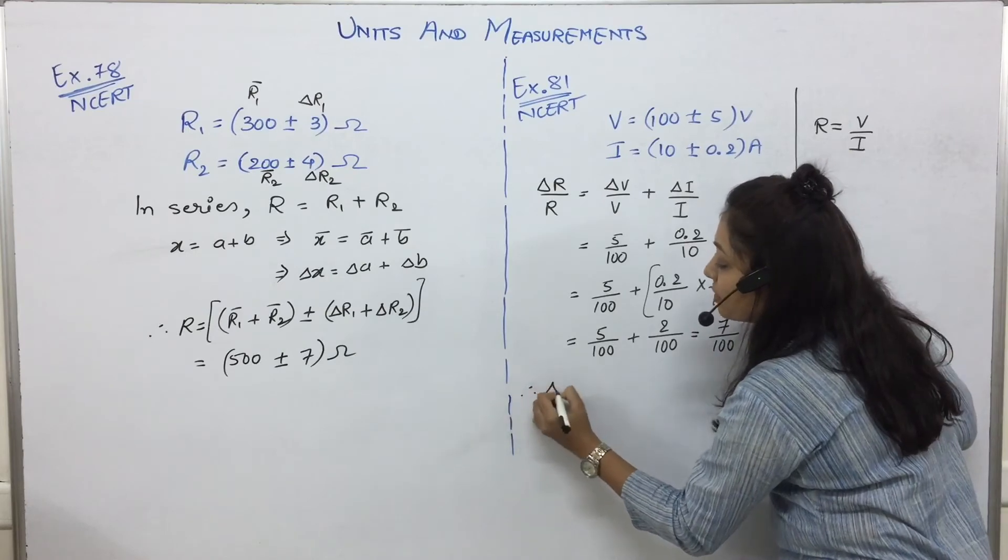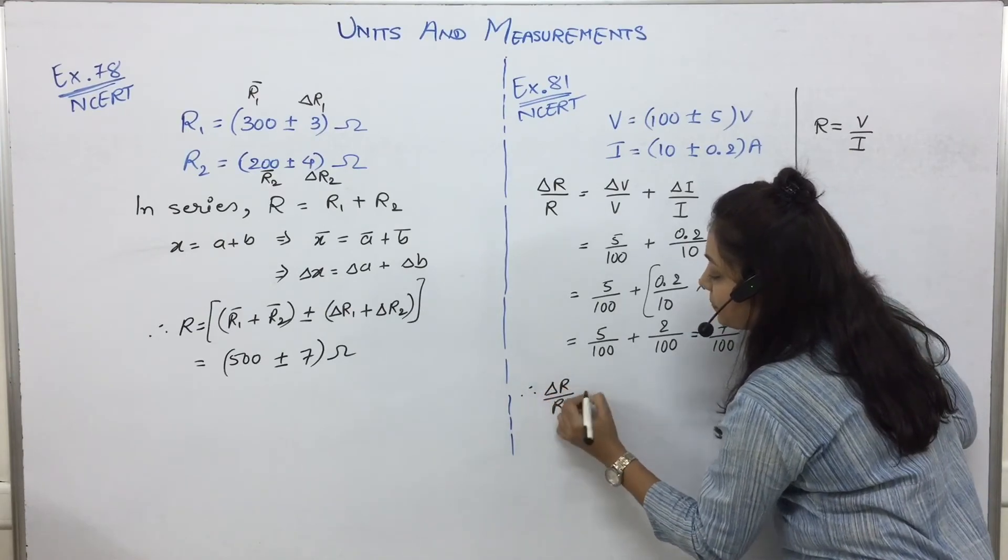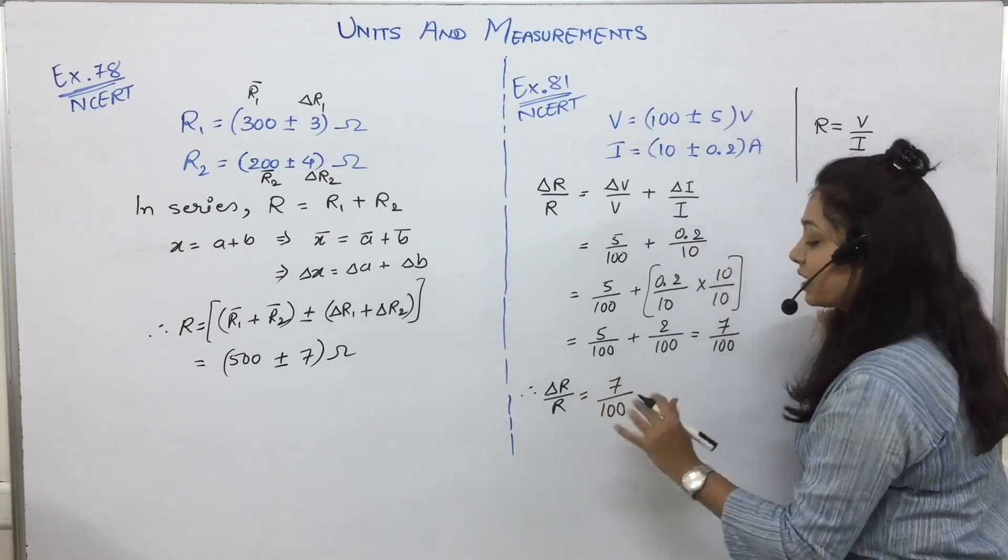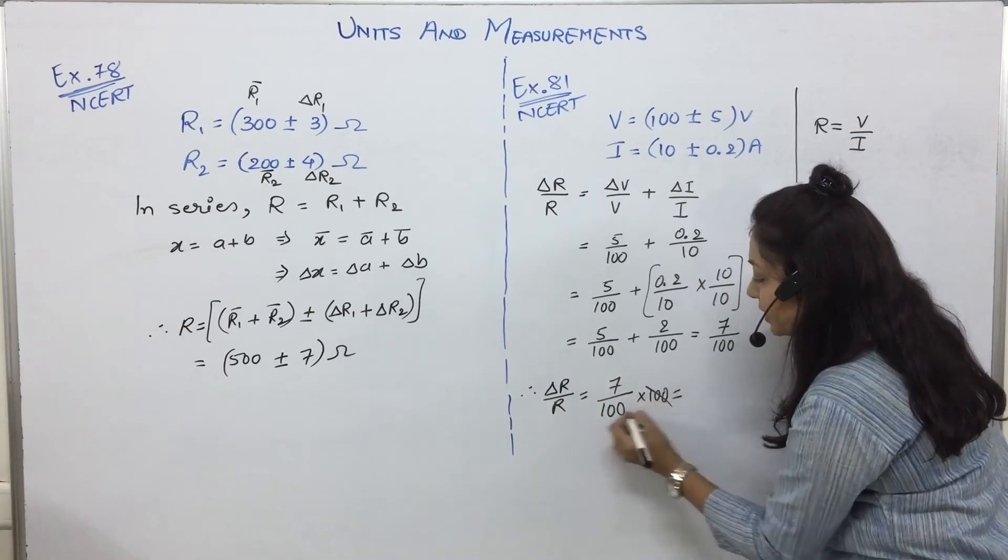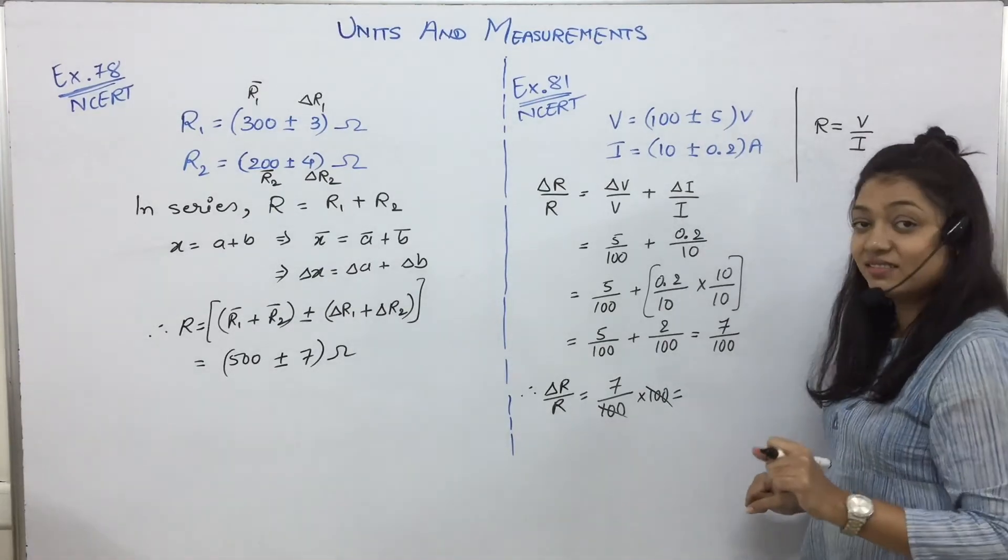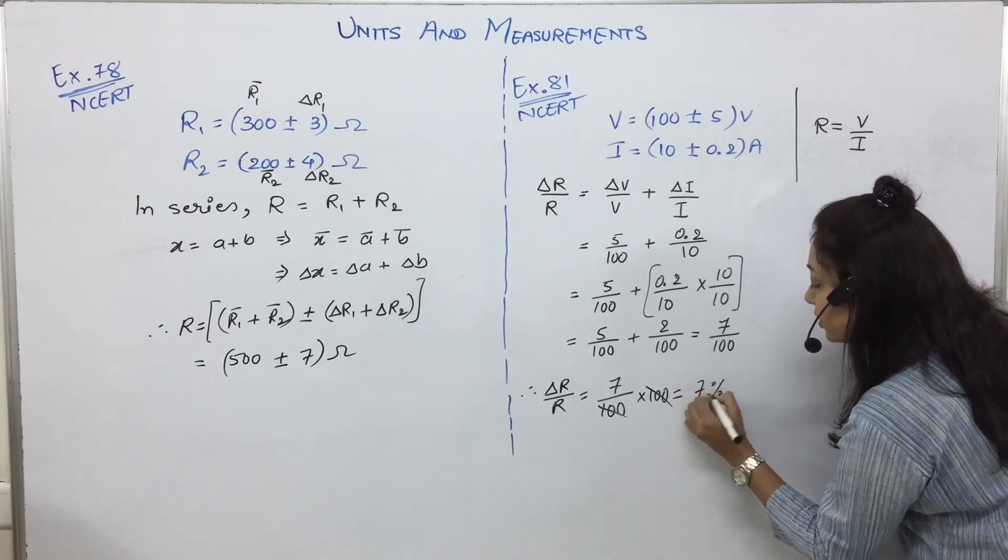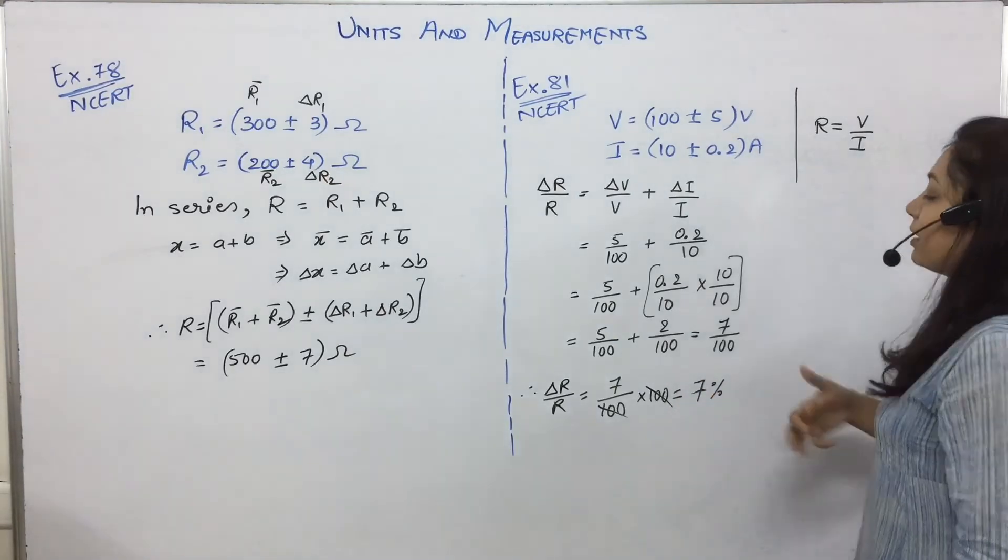Even if you don't calculate 0.07, it will work. Why? We need percentage error. Delta R by R is equal to 7 upon 100. Whatever value you get for fractional error, multiply by 100 to get percentage. This gets cancelled. This is the reason. 7 percent. No offense to anybody.